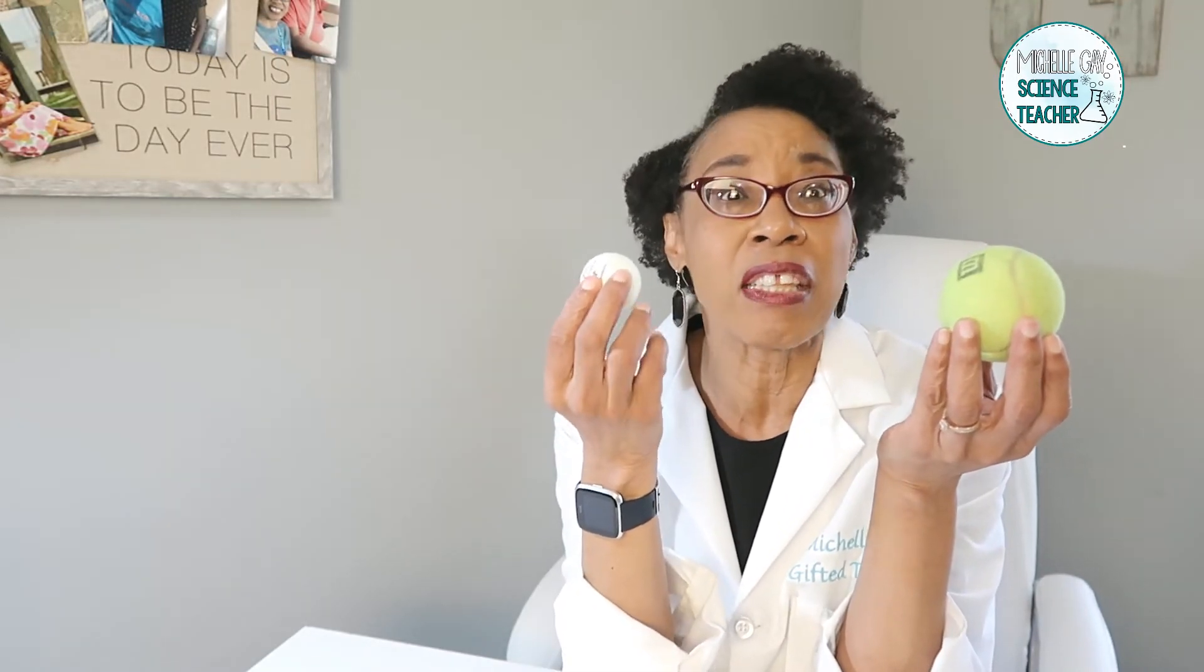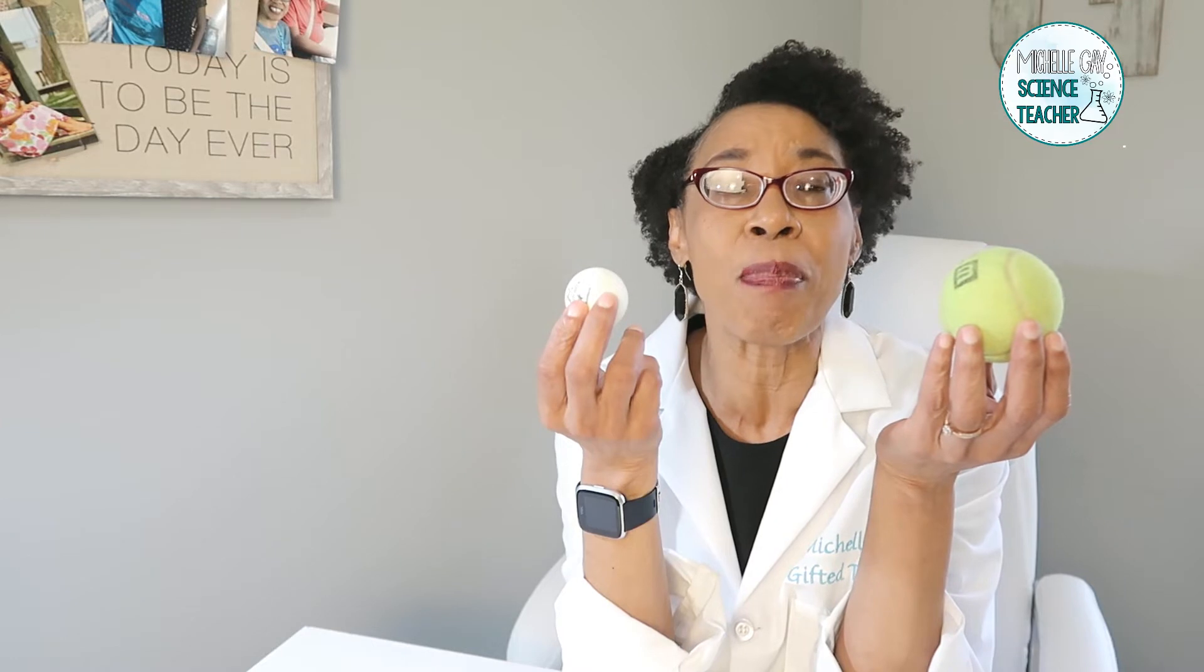Our moon is a natural satellite. It looks like it is large and enormous, bigger than Earth, but in reality, if I use this tennis ball to represent Earth, well then this ping pong ball would represent the moon.